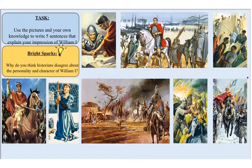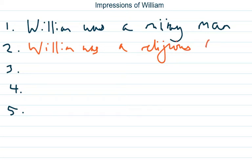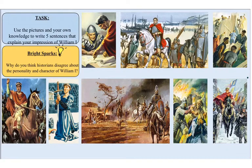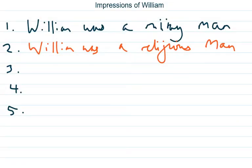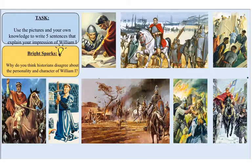He's on his knees in a religious pose, so a second one we could do is: William was a religious man. That would be a very accurate second one. Now what about these — where men are hanging farmers, burning the fields, burning the houses? We could say: William was a violent man. That sort of links in to military a little bit, but they are separate adjectives.